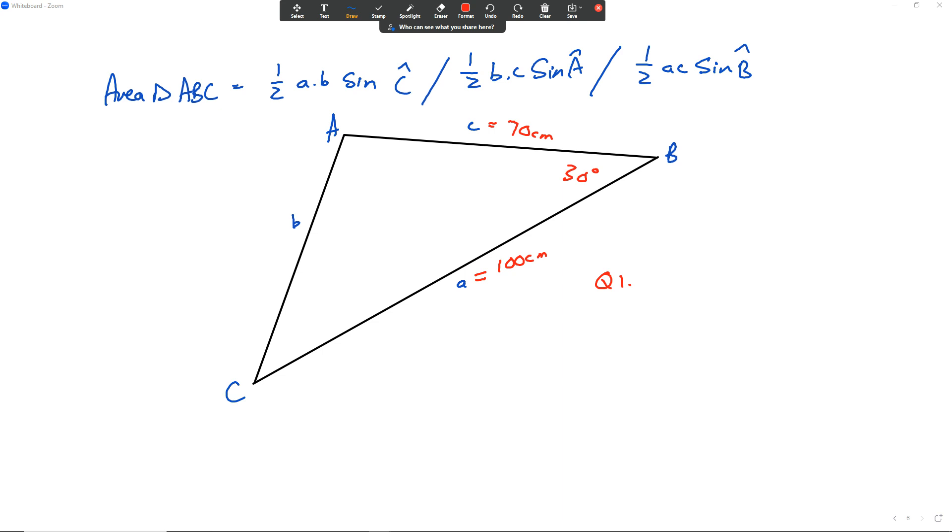Let's go through this one now. Because you're given the angle 30 degrees, which is over here and it's angle B, we're going to use this formula. The area of triangle ABC will be given by half of A, which is 100 from here, multiplied by C, which is 70, multiplied by sine 30 degrees.